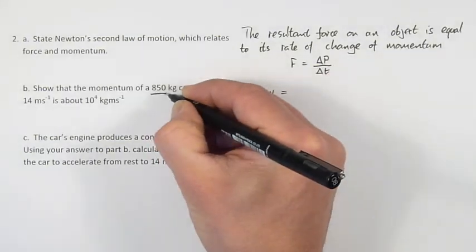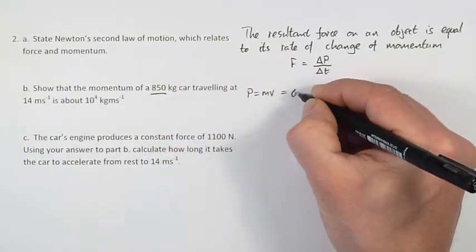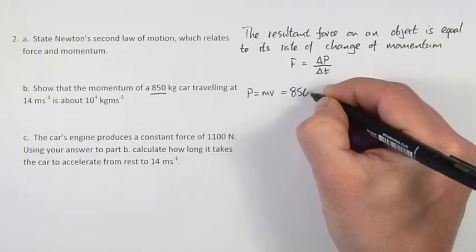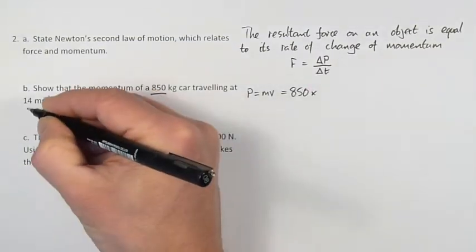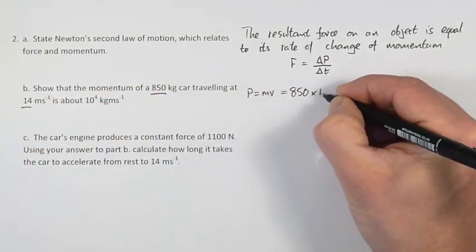And we have a mass of 850 kilograms. We are going to multiply that by a velocity of 14 metres per second.